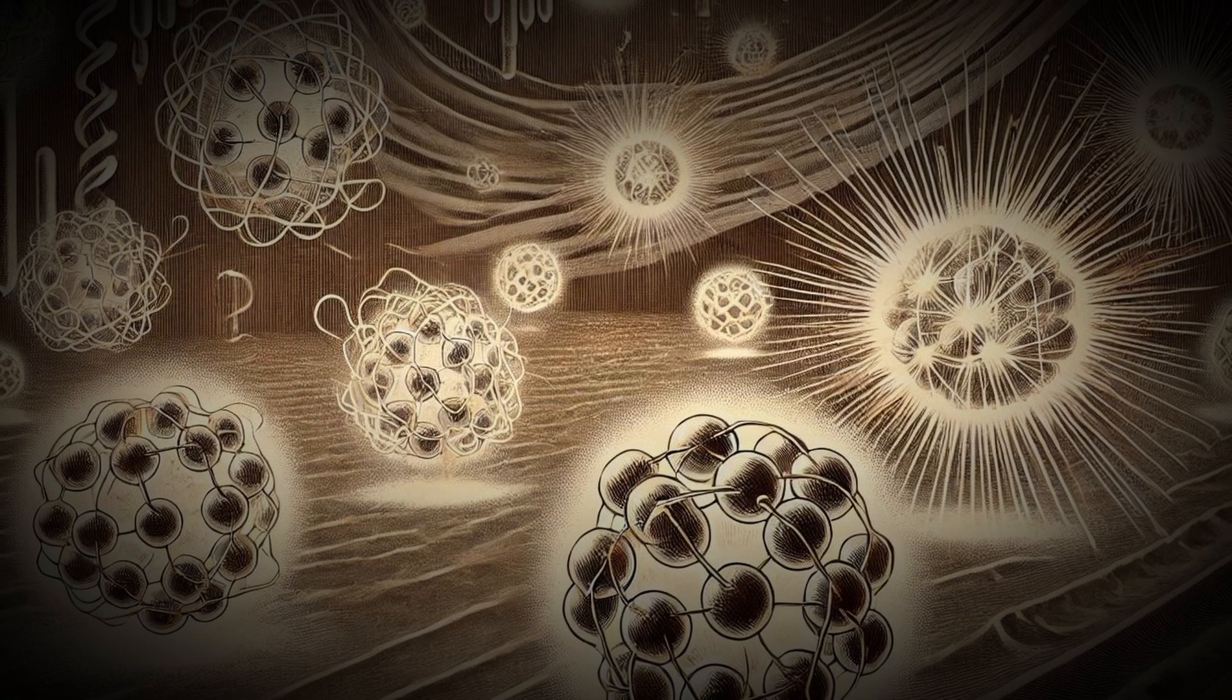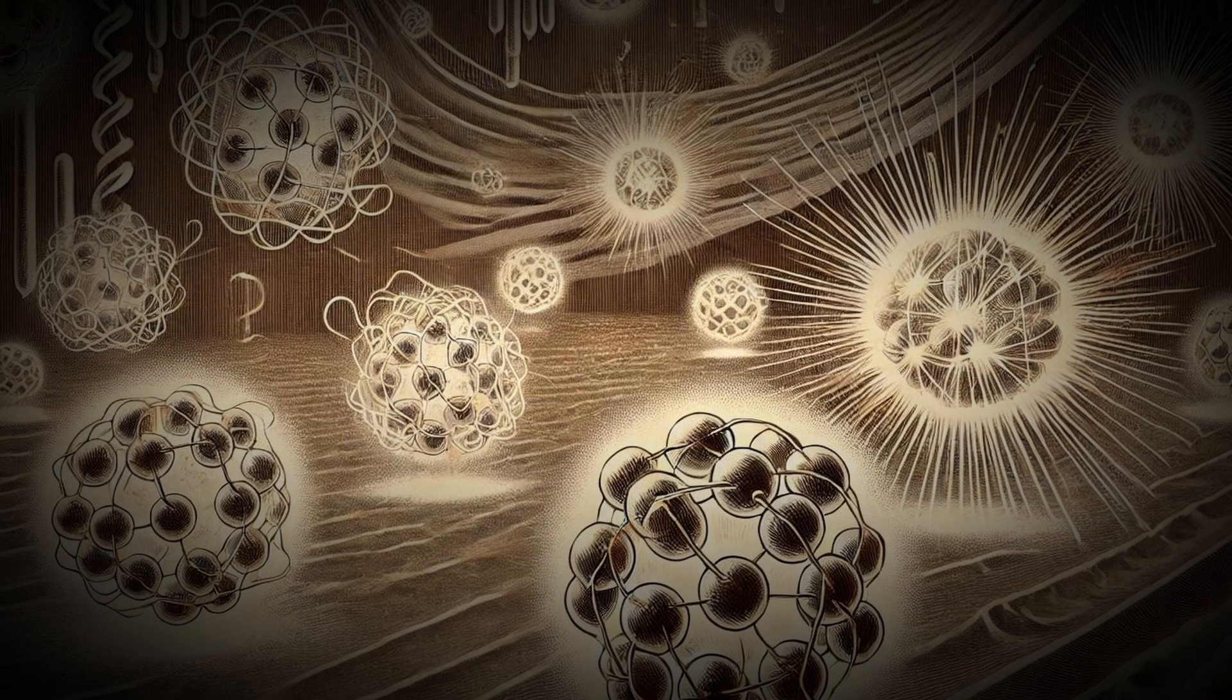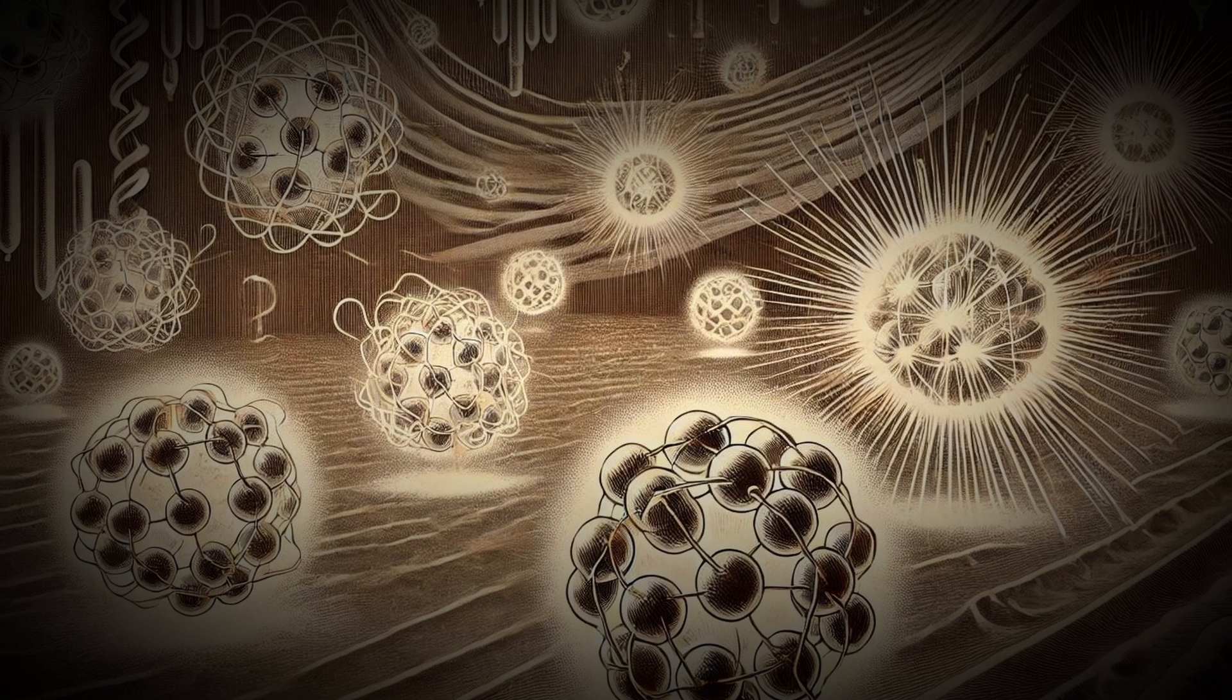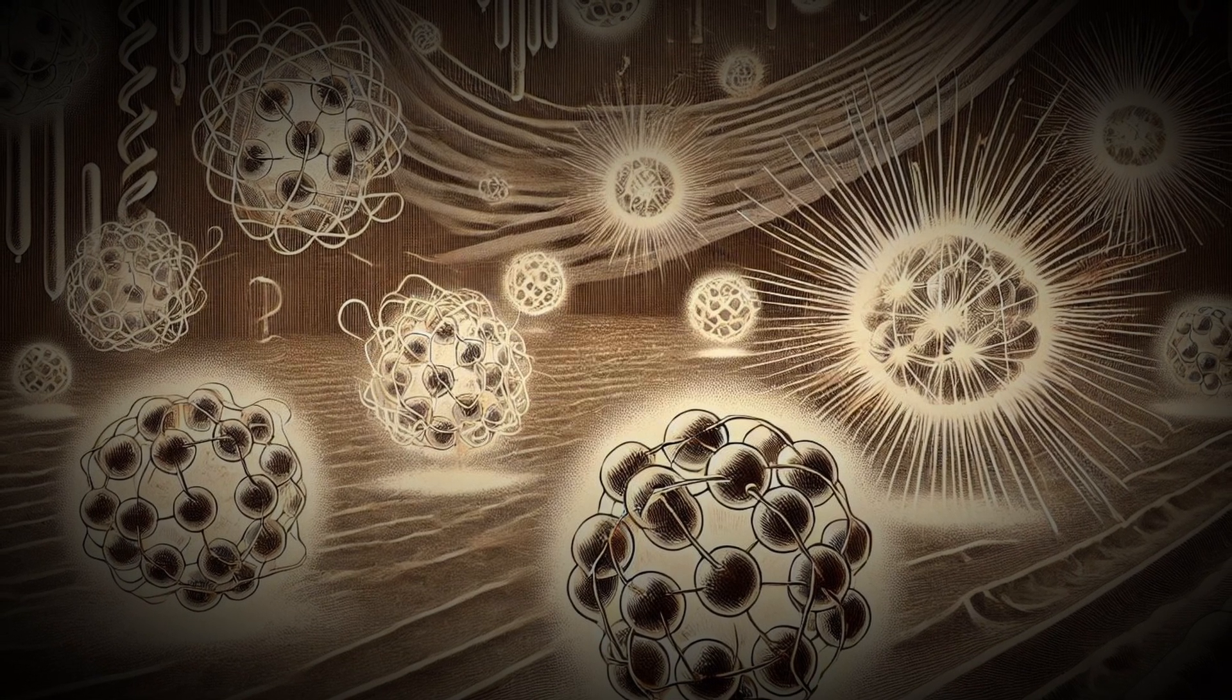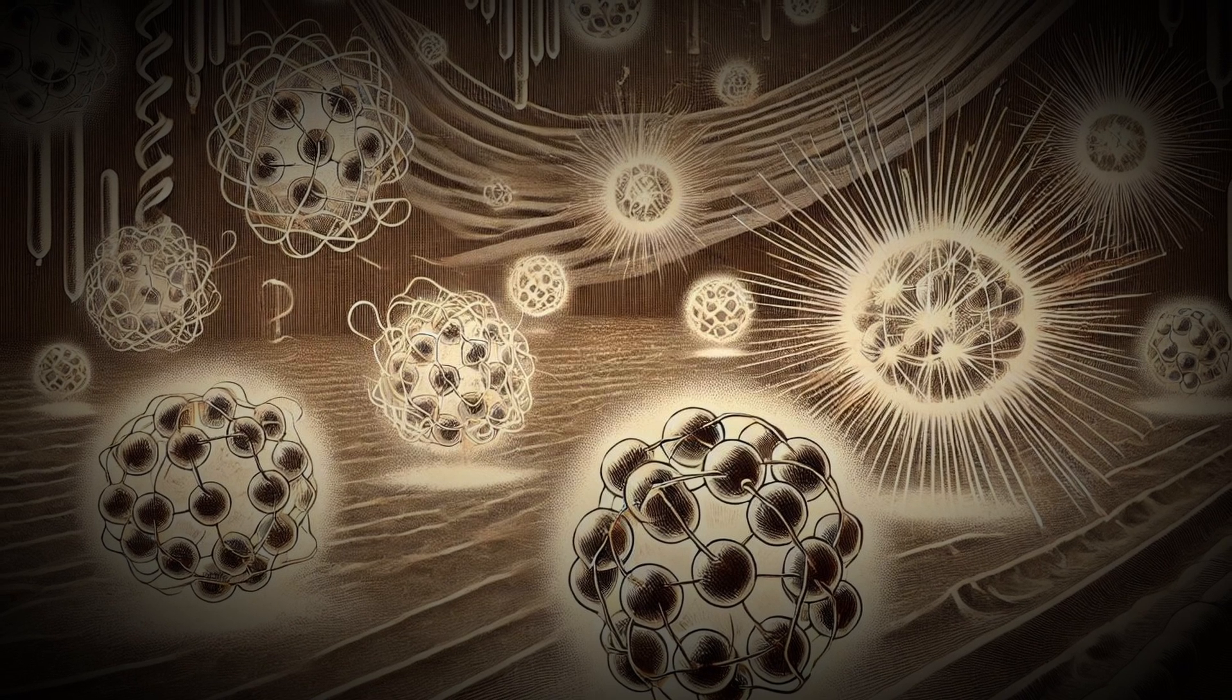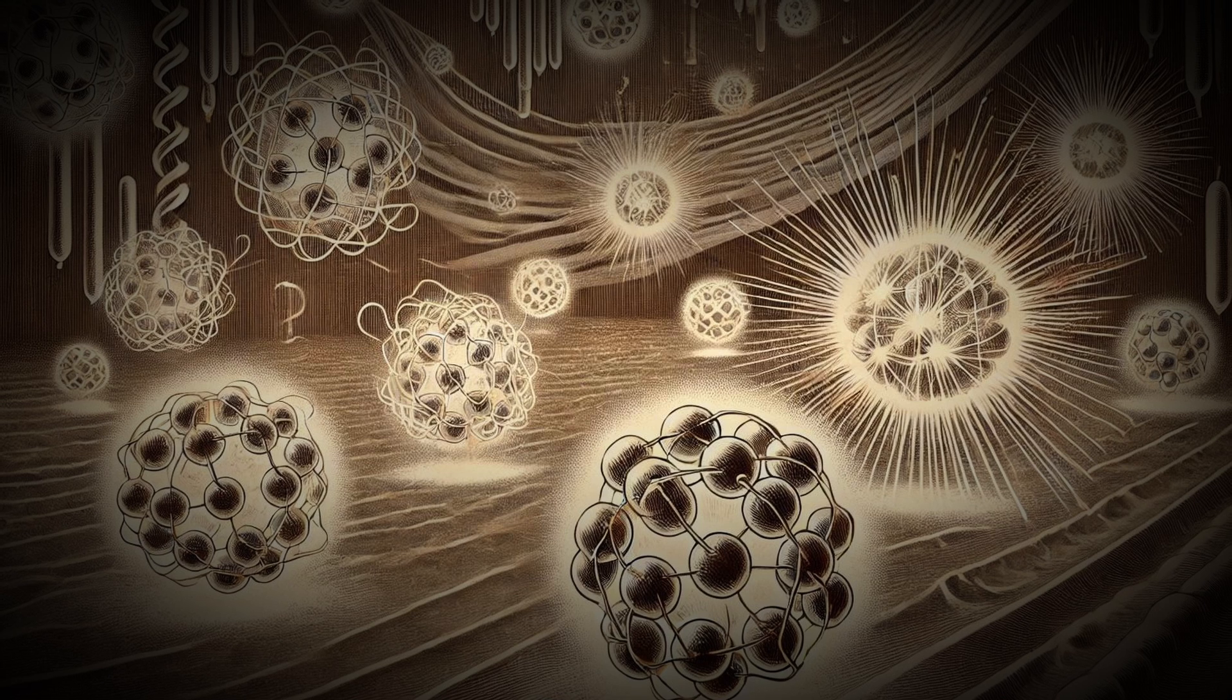Now, replace the light beam with electrons, tiny chunks of matter. You might expect them to act like little bullets and form two distinct bands on the screen. But that's not what happens. Instead, the electrons also create an interference pattern, suggesting they behave like waves interfering with themselves.